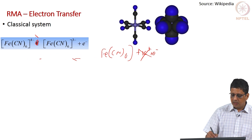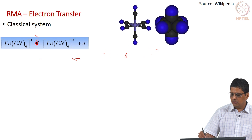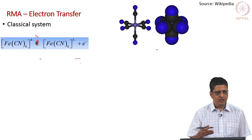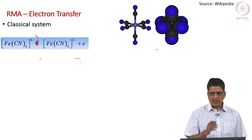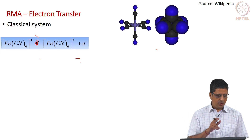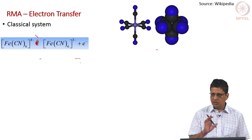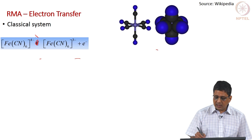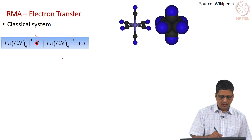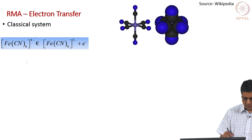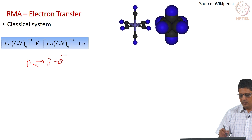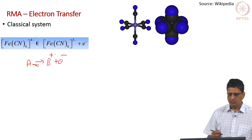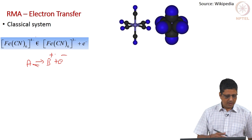So this is normally taken as a classical system. In our lab, if we suspect something is wrong, we take a gold electrode — ideally we should use a platinum electrode — put this, measure the spectrum. If it comes correctly, we are okay; if it does not come correctly, maybe the reference electrode is not good or the instrument has some problem, and we have to sort it out. This is something where we expect it to behave nicely. We will call this as A going to B plus an electron, a reversible reaction.